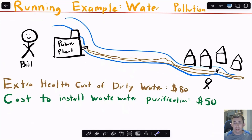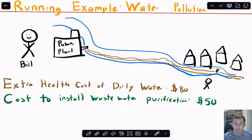To make it more concrete, we're going to use a running example of water pollution. We've got Bill, who owns a power plant. Part of making electricity is that this power plant dumps some dirty water into the river that people have to deal with downstream. There's an extra health cost of this dirty river — about $80. What Bill could do is install a water purification system that would remove the entire amount of dirty water from the river, and that would cost about $50. It makes sense to install it because it costs less than the $80 in damages.